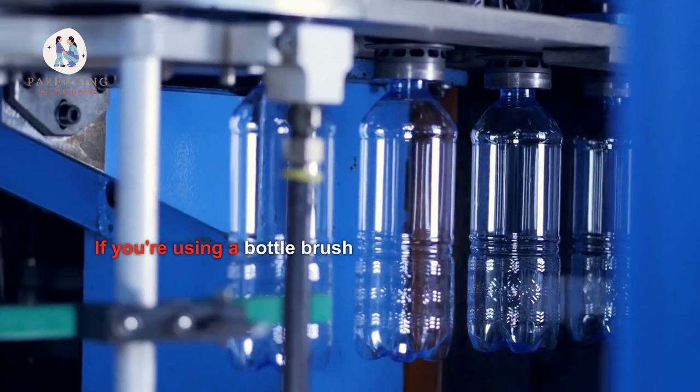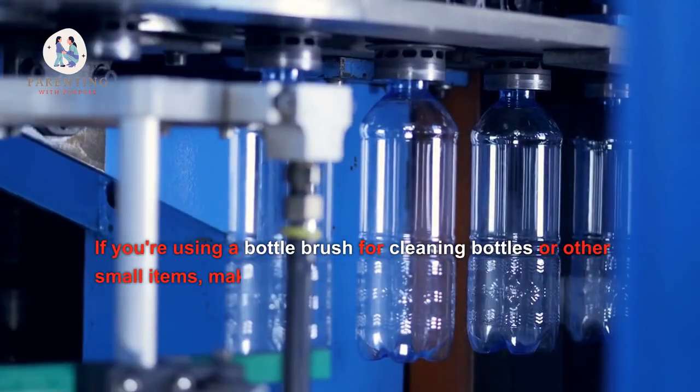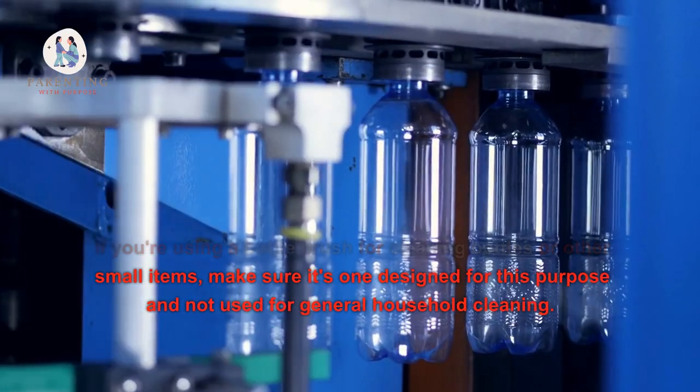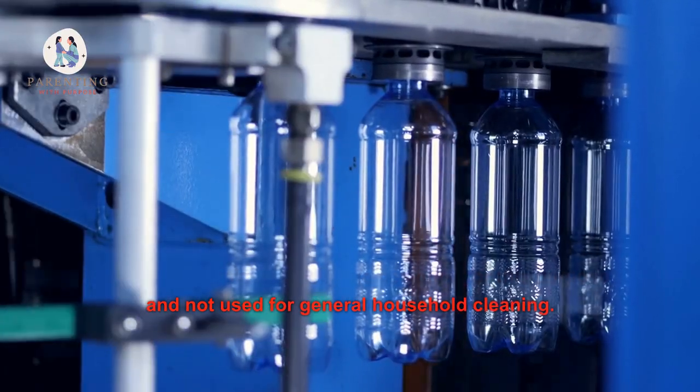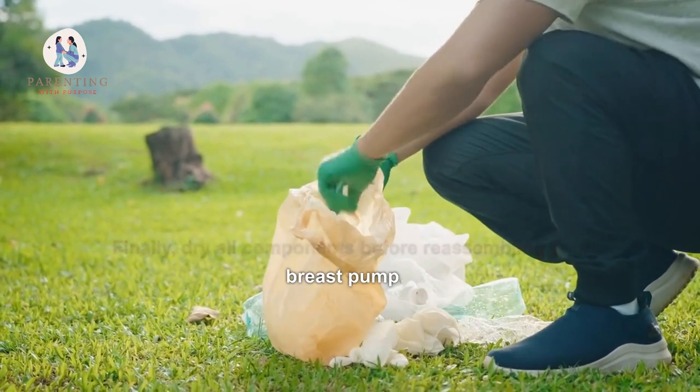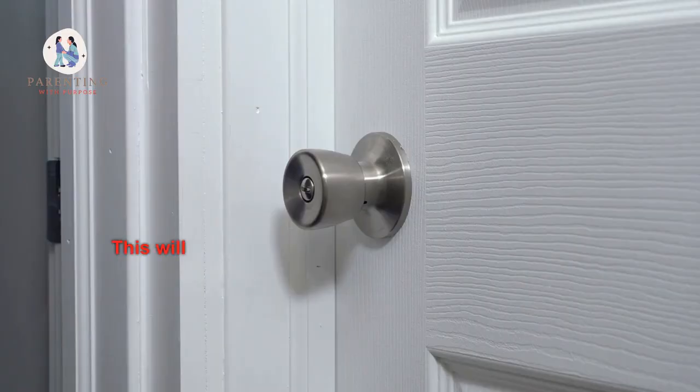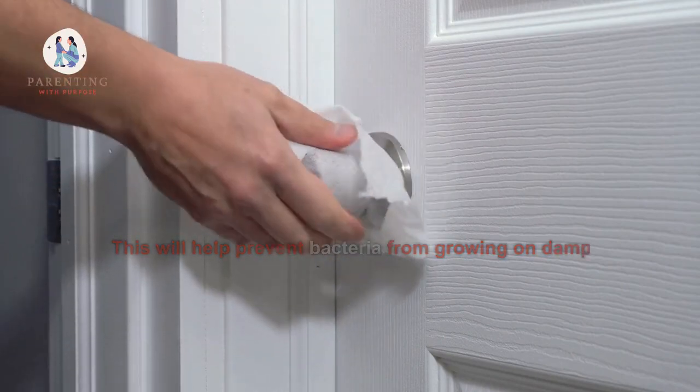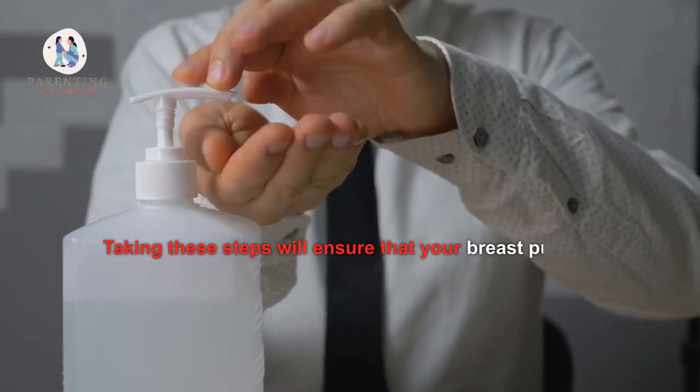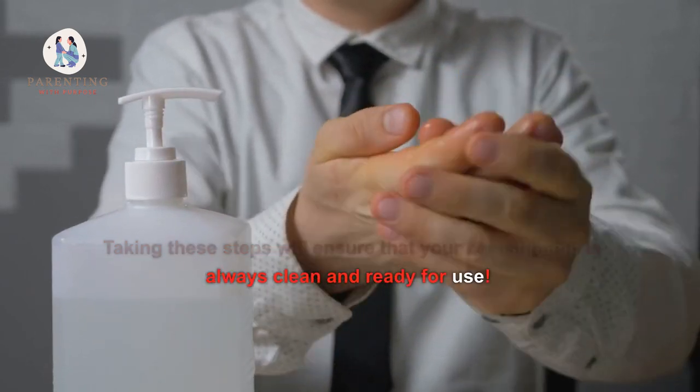If you're using a bottle brush for cleaning bottles or other small items, make sure it's one designed for this purpose and not used for general household cleaning. Dry all components before reassembling your breast pump. This will help prevent bacteria from growing on damp surfaces. Taking these steps will ensure that your breast pump is always clean and ready for use.